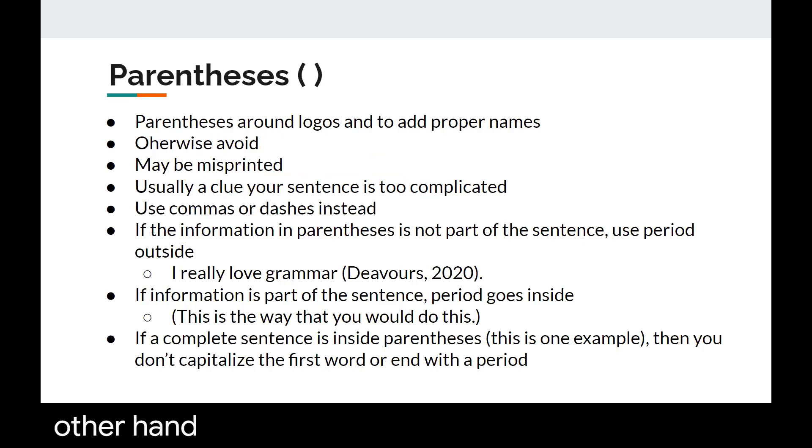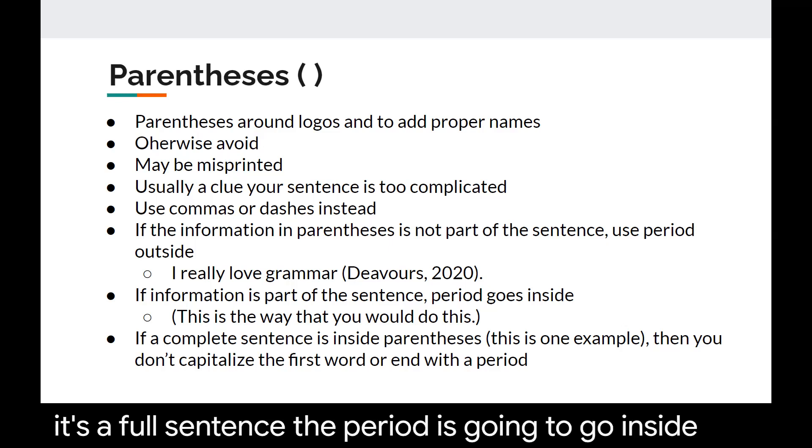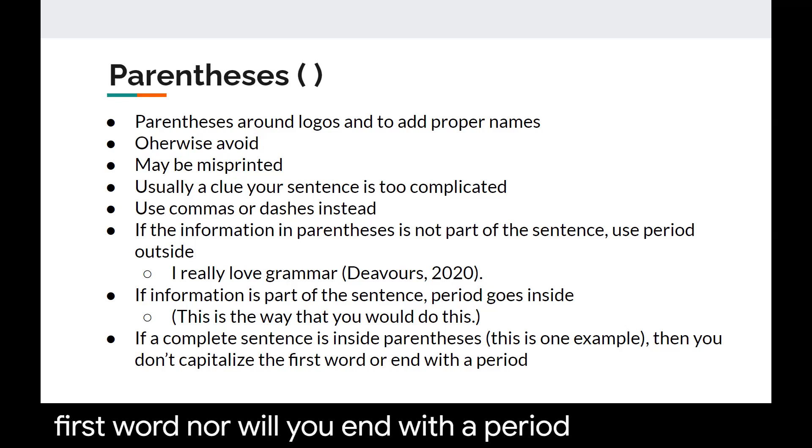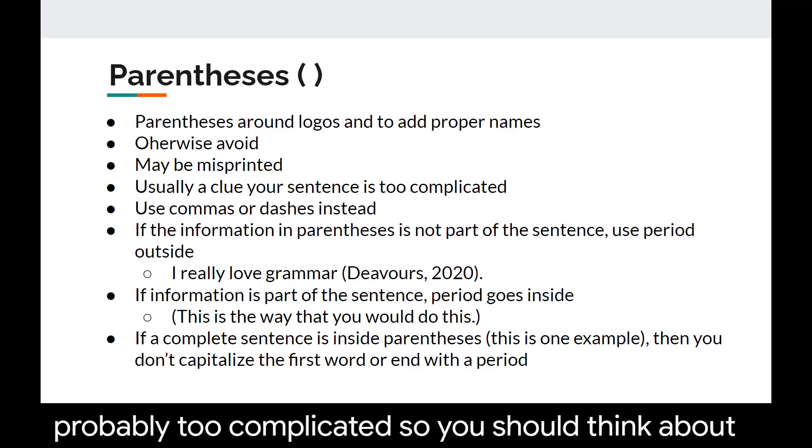Parentheses on the other hand are typically only used with logos or to add proper names for something. Otherwise you want to avoid them. A lot of times they are misprinted and it can lead to confusion. When you're using parentheses it's usually a good clue that your sentence is getting a little too complicated. You should use commas or dashes to offset something instead. If the information in the parentheses is not part of the sentence you're going to use the period outside such as if you're quoting an APA for a citation you would use it outside. If the information is part of the sentence and it's a full sentence the period is going to go inside but then if you're using a complete sentence inside a larger complete sentence you will not capitalize the first word nor will you end with a period. However please keep in mind that if you have two full sentences inside one sentence again it's probably too complicated so you should think about rewriting the sentence all together.